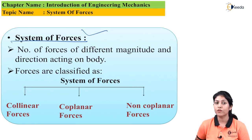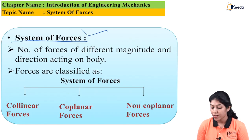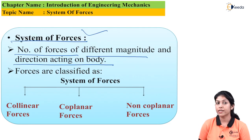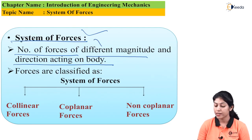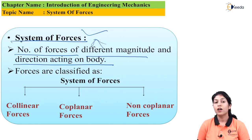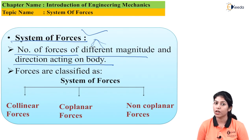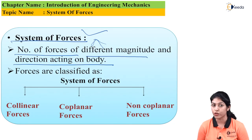The basic definition of system of forces is: a number of forces of different magnitude and direction acting on a body, so that body is considered under the system of forces. Only one force is not considered a system of force. If number of forces are acting on a body and the body is changing its position from non-equilibrium to equilibrium or vice versa, that body will be under the system of forces.